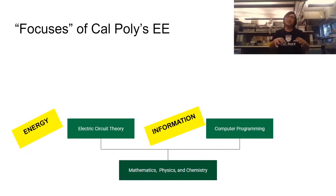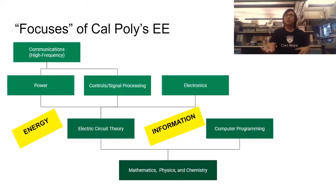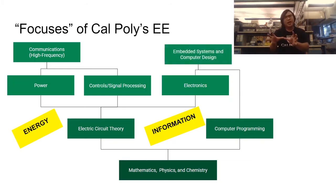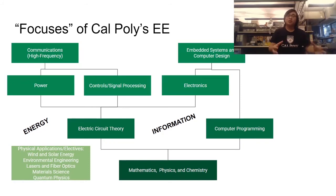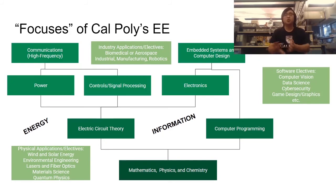The focus of Cal Poly EE: we start with mathematics and physics in the first two years of the program. But soon we start doing projects in laboratories in areas of power, controls, and electronic communications — examples of communications would be radars and antennas to photonics and lasers. With enough understanding of computer programming and electronics, students in EE and computer engineering finally get to the area of embedded systems and computer design. Students can take more electives in these areas, such as renewable energies, quantum physics, material science, biomedical engineering, or industrial engineering.